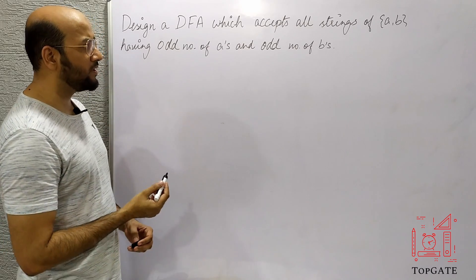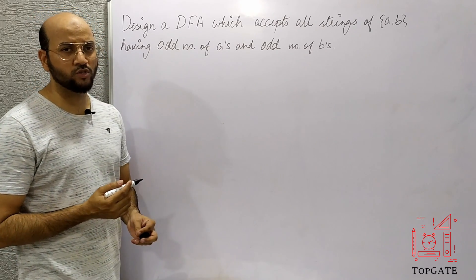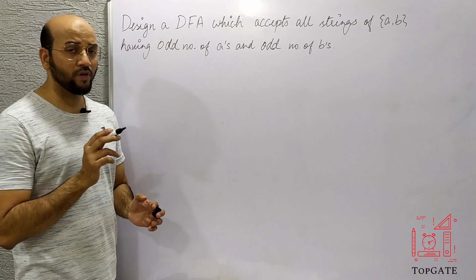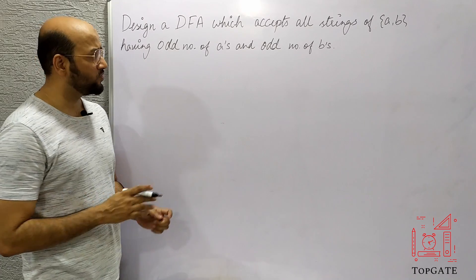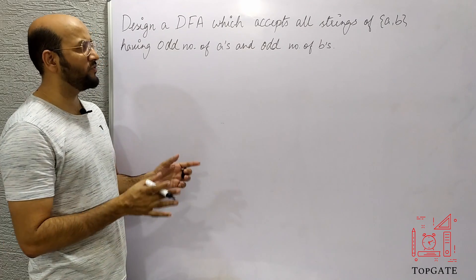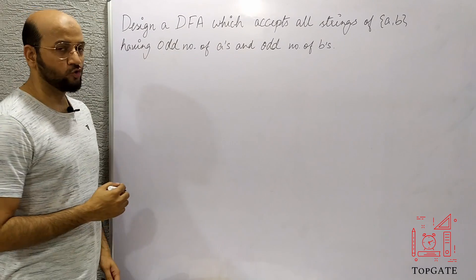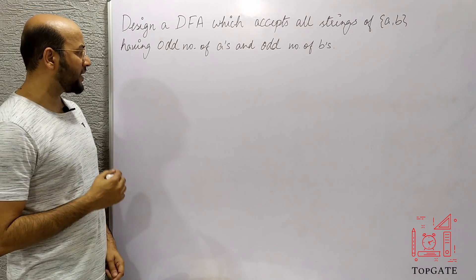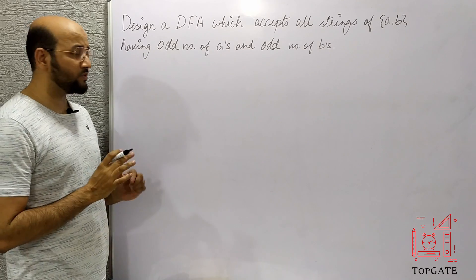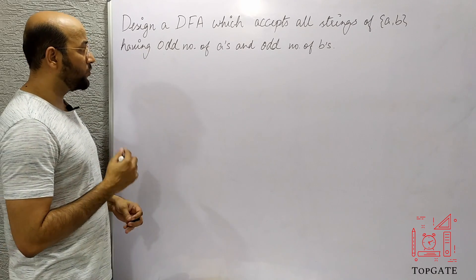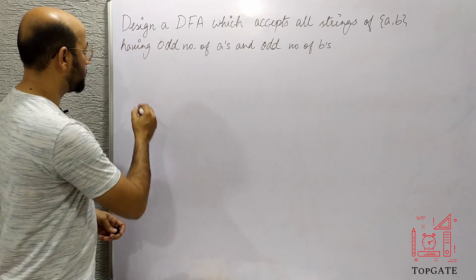In the previous video, we have already discussed a similar kind of problem — that was for even number of A's and even number of B's. So there is not much difference between these two questions. Now, first of all, let's try to understand what kind of language this is and what is the minimum string in this case.